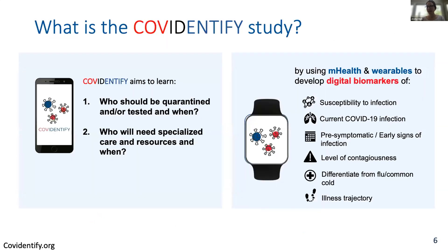We've been running a study out of my lab for roughly the last two years called CoveIdentify. The idea was that we are collecting digital biomarkers or signals from consumer wearable devices on a large population to try to answer two questions. One is: who should be quarantined or tested and when — is there a way to tell who's at high risk of having a COVID-19 infection from their smartwatch data? The second question was: are we able to detect who might need specialized care resources and when?